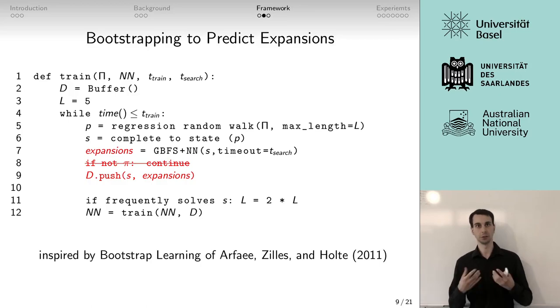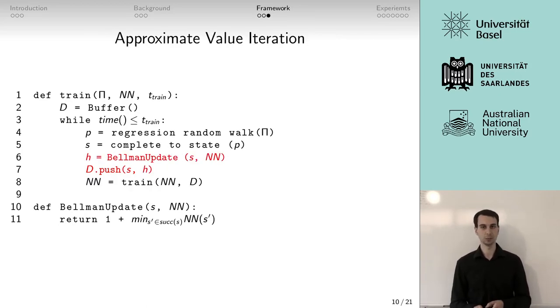And yes, this is a lower bound to the true expansions, but at the same time, it is sufficient to tell the neural network that this state is difficult. Our last approach used approximate value iteration, where we used Bellman updates to calculate the label for a specific state.